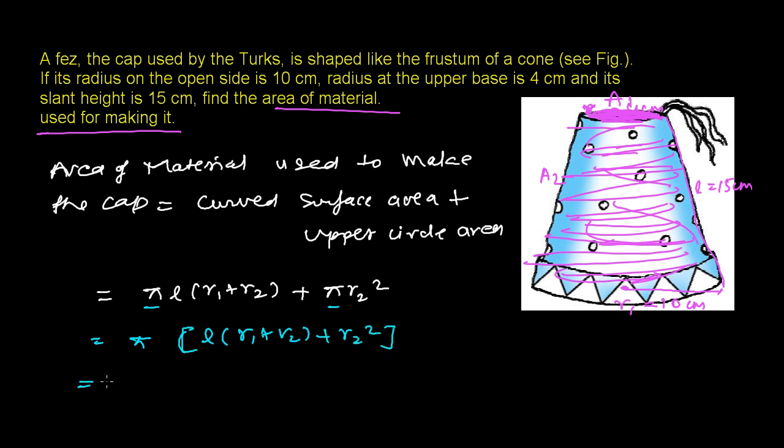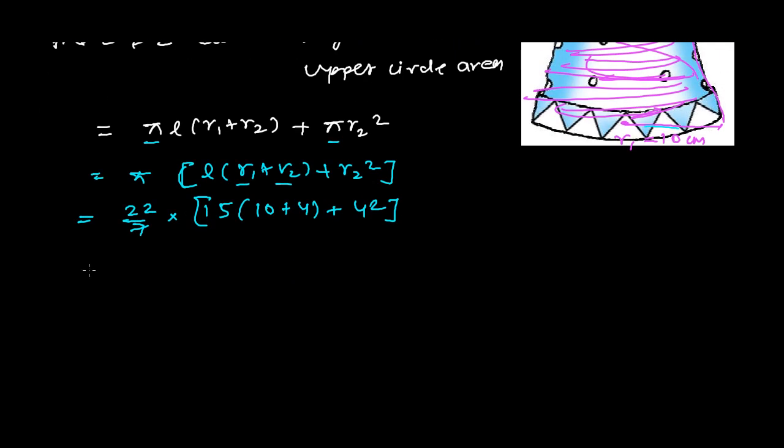Let's plug in all the values: π = 22/7, l = 15, r1 = 10, r2 = 4. So it's (22/7) × [15 × (10 + 4) + 4²]. That's (22/7) × [15 × 14 + 16].